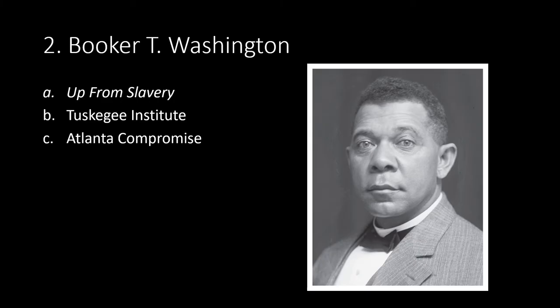Booker T. Washington: 'Up from Slavery' was the autobiography of Booker T. Washington. Born into slavery, Washington walked over 400 miles to attend a private school, slept under the boardwalk, and cleaned the schoolhouse to pay for his tuition. He became the founder of the Tuskegee Institute, a historically Black vocational training school, and went on to become the nation's most prominent African American leader. Washington gave a speech in Atlanta known as the Atlanta Compromise, urging Blacks to accommodate themselves to segregation — accepting segregation and disenfranchisement in exchange for white assistance in education and job training.